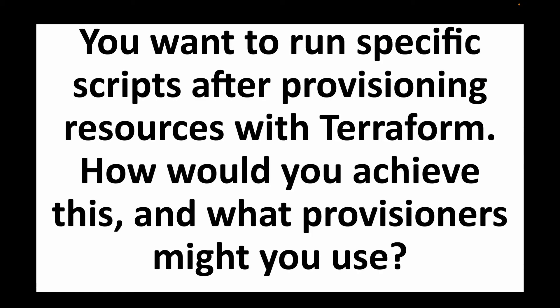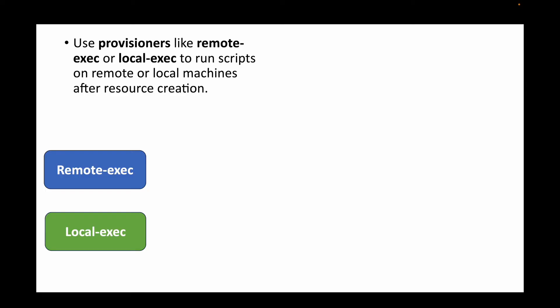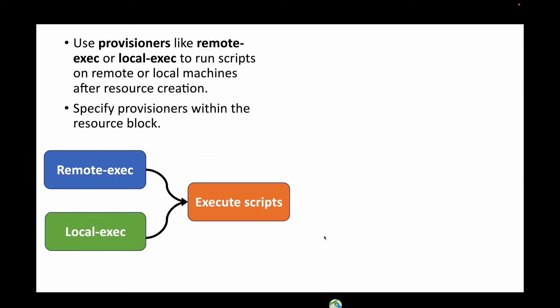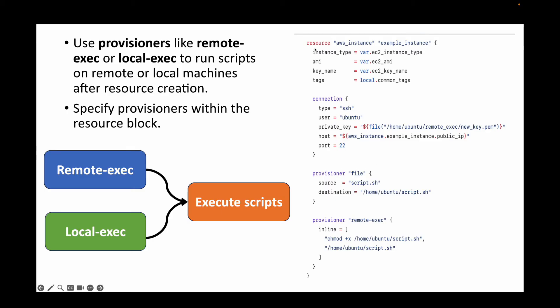The next question is: you want to run specific scripts after provisioning your resources — how would you achieve this and what provisioners might you use? Terraform has 'local-exec' and 'remote-exec' provisioners. Remote-exec lets you run commands on remote machines — for instance, after launching an EC2 instance. You specify these provisioners within the resource block: here I have a remote-exec running inline commands, first setting execute permissions then running a script. You also provide connectivity information so Terraform can establish the connection and execute the commands.